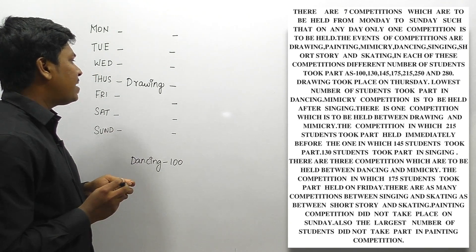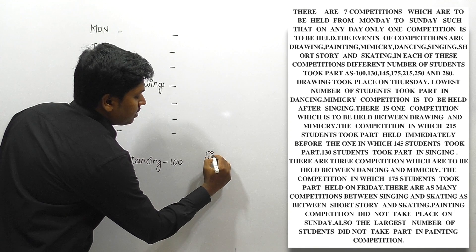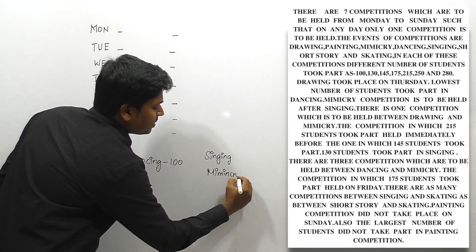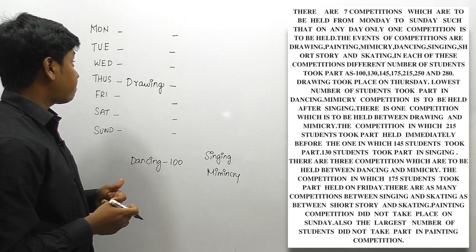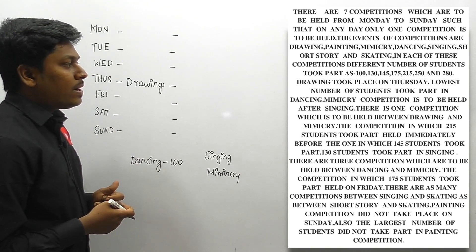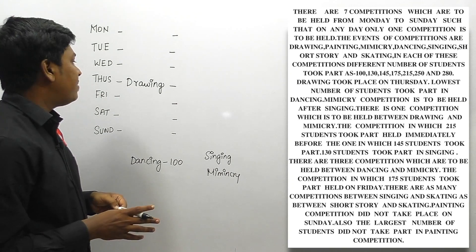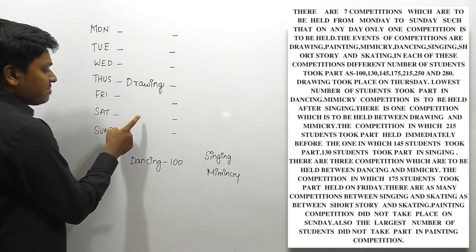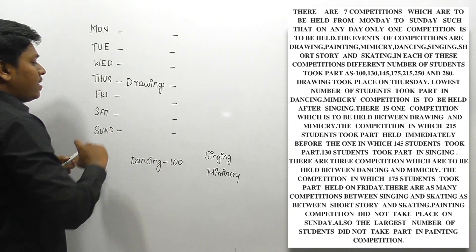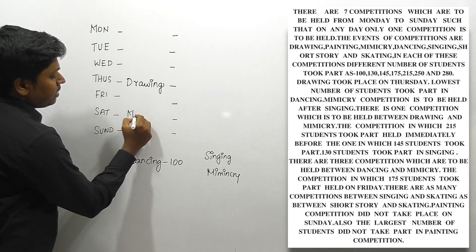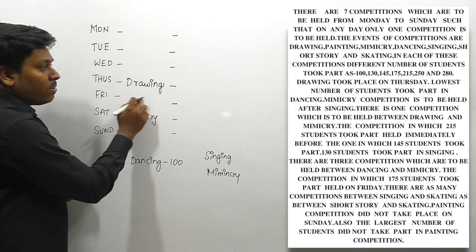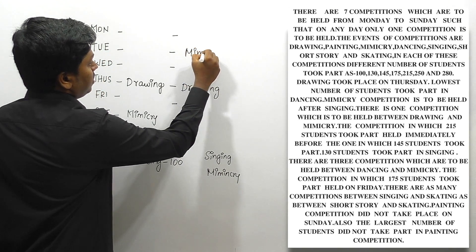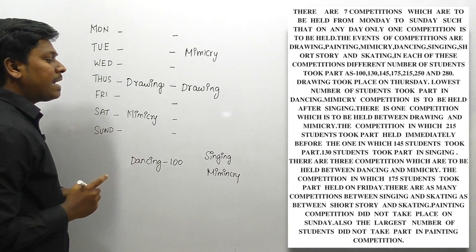Next clue: mimicry competition is to be held after singing, but not immediately after. So after singing, there must be a mimicry competition with at least one competition in between. Also, there should be a gap of one competition between drawing and mimicry — so we can place mimicry either before or after Thursday with one gap.